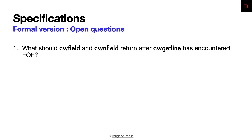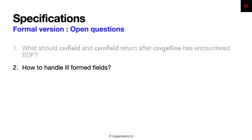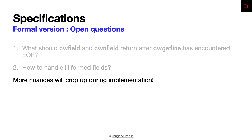To wrap up our specifications, here are some open questions. What should csv_field and csvn_field return when csv_get_line reaches end of file? The specification still doesn't specify how ill-formed fields are going to be handled — that is something that needs to be thought about and formalized. Definitely more nuances will crop up during implementation.